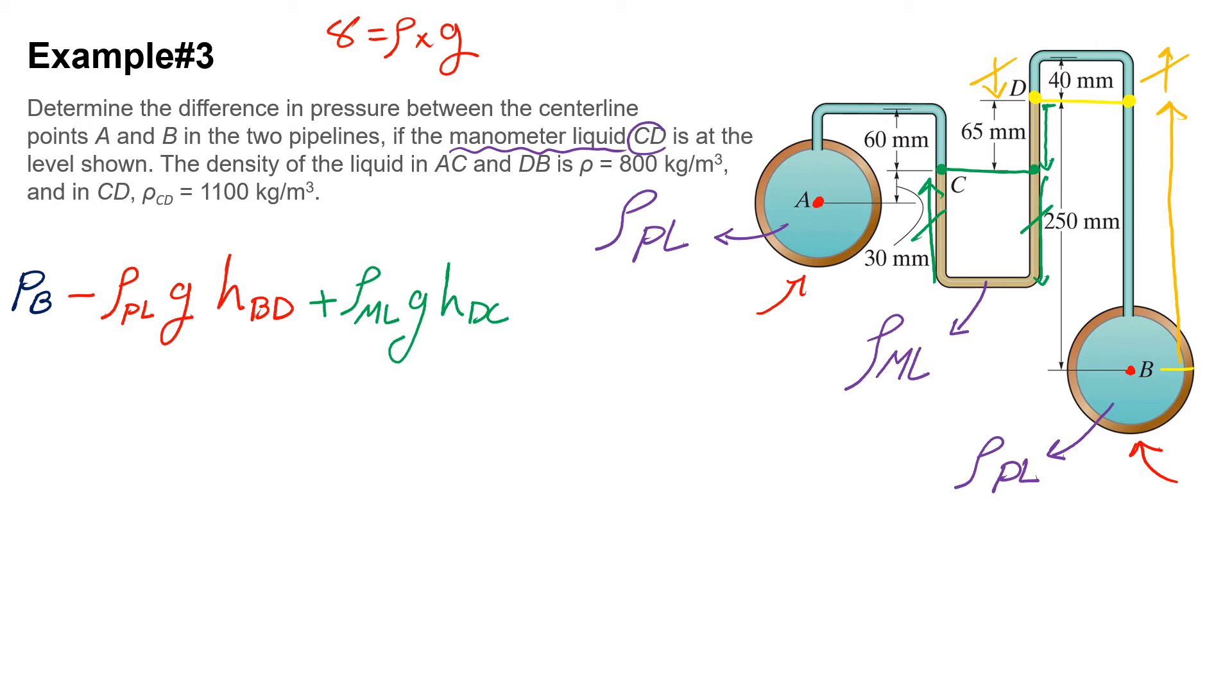Last, I need to move from C to A. Because this point and this point are gonna have the same pressure, I just need to move down this much - this and this cancel each other out. Because I am going down, the pressure is going to be positive and I'm moving in pipeline liquid: plus ρPL g hAC. This would be equal to pressure at point A.